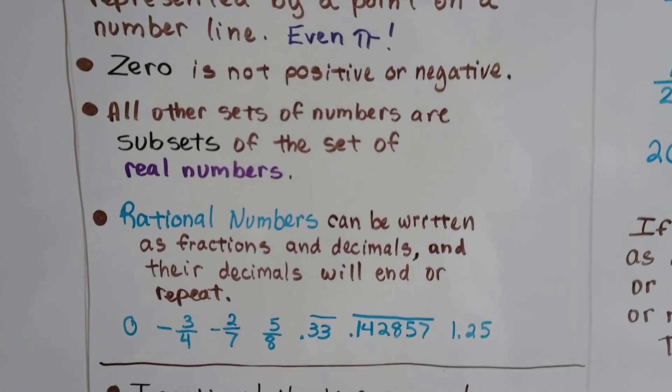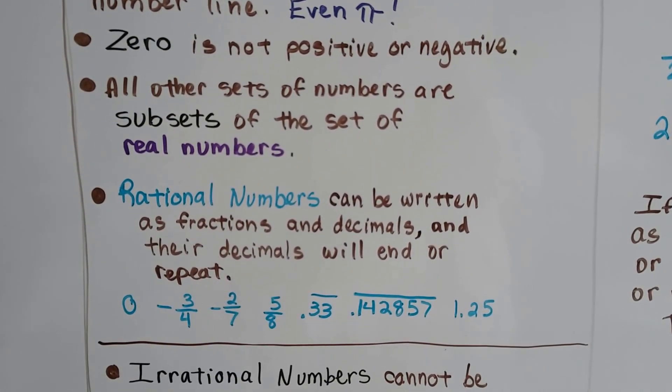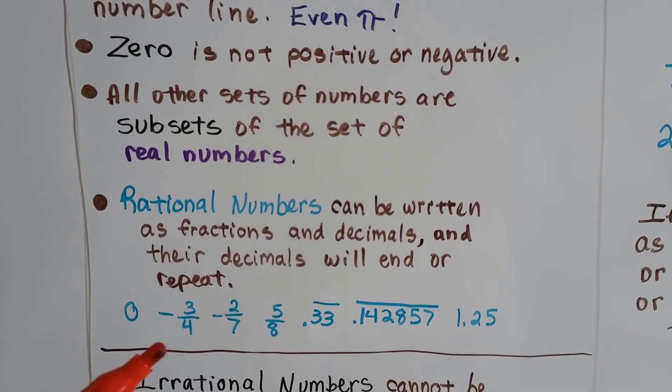All other sets of numbers are subsets of the set of real numbers. They're all subsets within the group of real numbers. Rational numbers can be written as fractions and decimals, and their decimals will end or repeat.